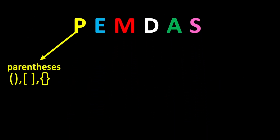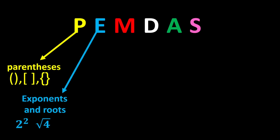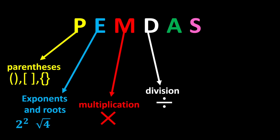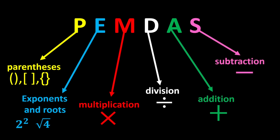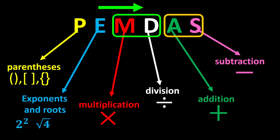P stands for parentheses, E stands for exponents and roots, M stands for multiplication, D stands for division, A stands for addition, and S stands for subtraction. According to PEMDAS, we first calculate parentheses, then exponents and roots, then multiplication and division, and finally addition and subtraction. Note that multiplication and division have equal priority — in any expression with both, we move left to right and perform whichever we reach first. This rule also applies to addition and subtraction.